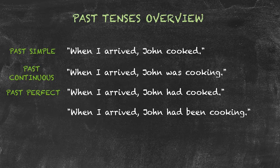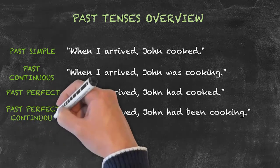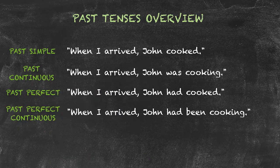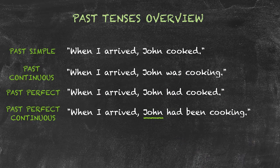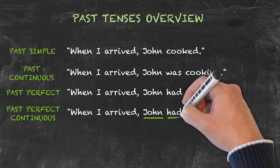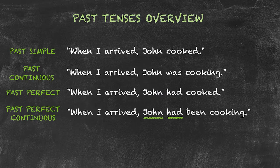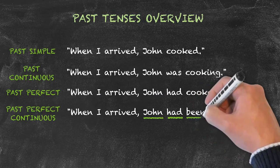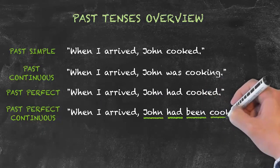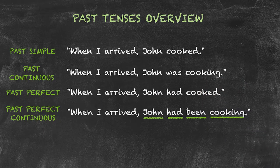The fourth example sentence: when I arrived, John had been cooking. This is using the past perfect continuous tense. John had been cooking. This has the structure: subject — John — auxiliary verb had, another auxiliary verb been, and then the verb plus ing.